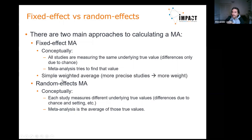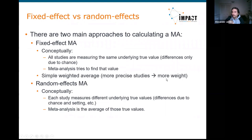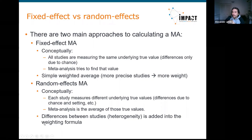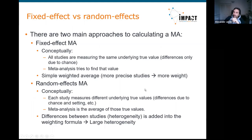In fixed effect meta-analysis, it's a simple weighted average where more precise studies receive more weight. In random effects meta-analysis, the differences between studies — what we call heterogeneity — is added into the weighting formula. So if there is large heterogeneity, meaning many differences between studies, we get a larger confidence interval for the meta-analysis.